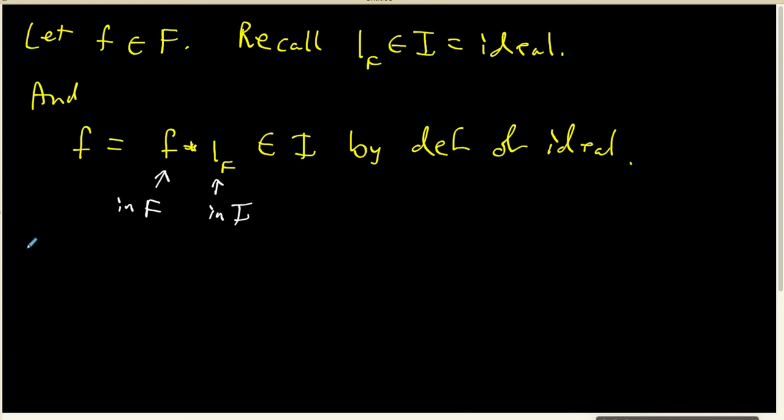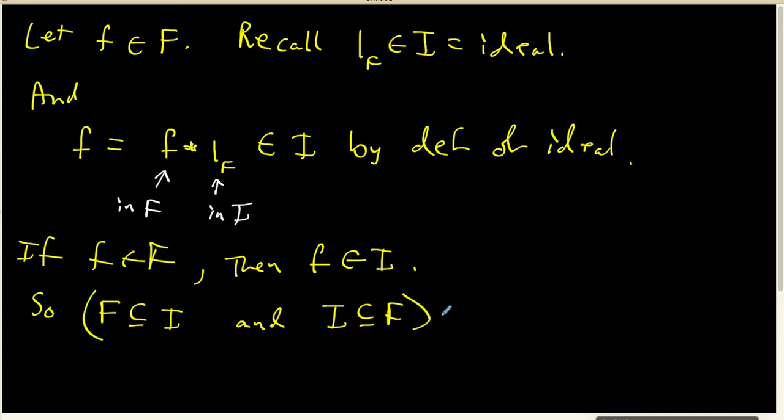And so what we've shown is that if f is inside capital F, then f is inside I. In other words, we now have F is a subset of I. And since I is an ideal of F, we also already know that I is a subset of F. And these two things together imply that F is indeed equal to the ideal I.